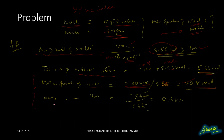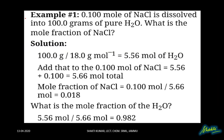And what about the mole fraction of water? To calculate it, we write the moles of water divided by the total number of moles — moles of NaCl and moles of water — that is 5.66, and the result is 0.982. So, 0.100 moles of NaCl dissolved in 100 grams of pure water gives a mole fraction of NaCl that we have calculated.